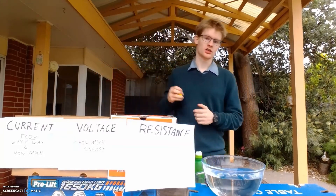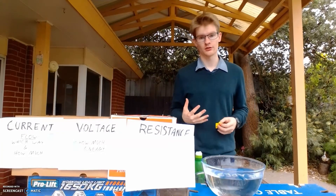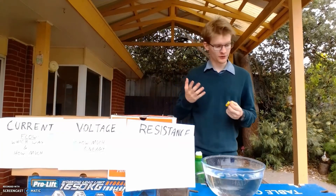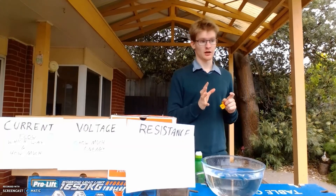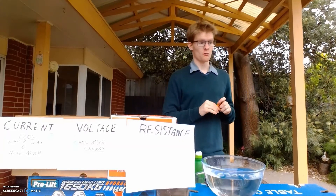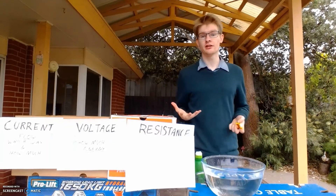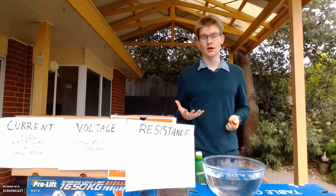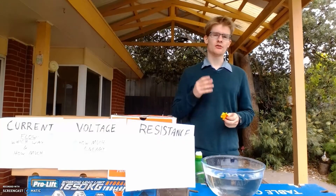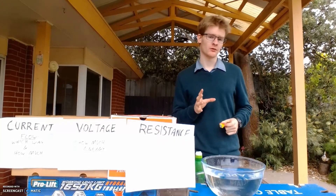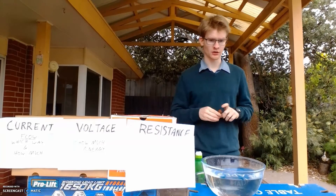Current and voltage have different effects on us humans. We often see labels that say this object has 1000 volts, and we just think, oh, that's actually really dangerous. But it's not the voltage that's actually dangerous — it's the current. And I'll explain why.